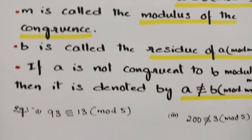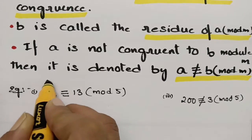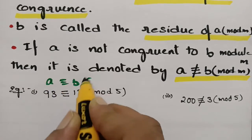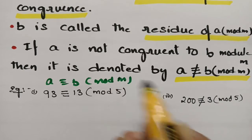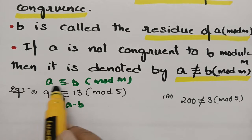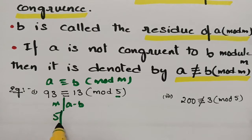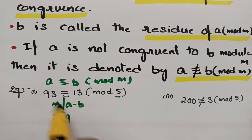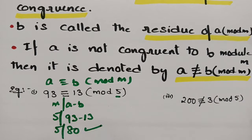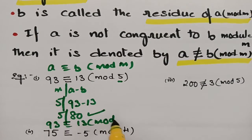For example, 93 ≡ 13 (mod 5). This is of the form A ≡ B (mod M), so M should divide A minus B. Here M is 5, and 5 divides 93 minus 13, which is 80. So M clearly divides 80, and therefore we say that 93 is congruent to 13 mod 5.